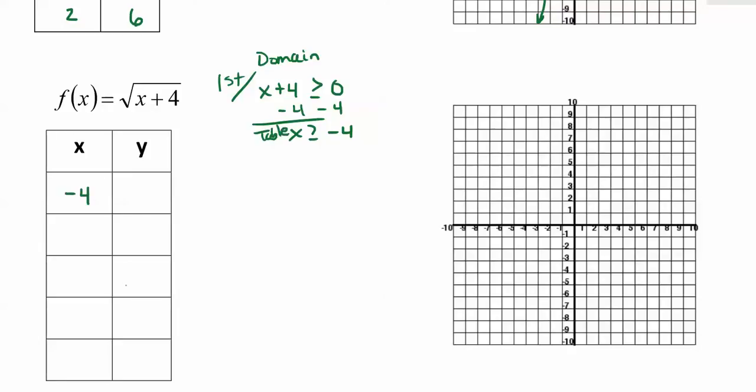Then I can plug in some other numbers. I've got to go greater. So as I go to the right, you can skip around. You can plug in 0, you can plug in 2, you can plug in 5. You can try to make this work out to be a perfect square number. That's up to you.